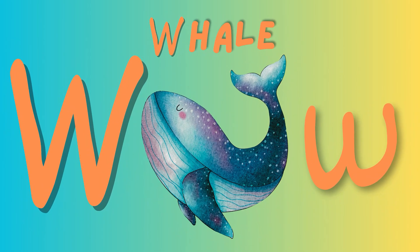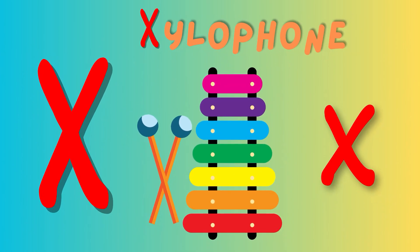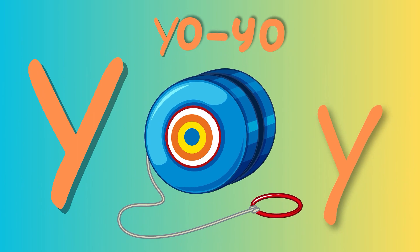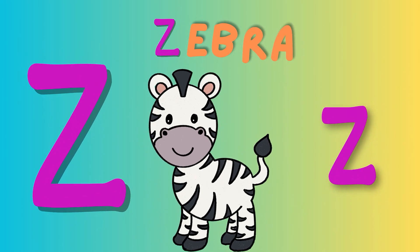W is for Whale. Whale, Whale. This is a Whale. Whale, Whale. X is for xylophone. Xylophone, xylophone. This is a xylophone. Xylophone, xylophone. Y is for yo-yo. Yo-yo, yo-yo. This is a yo-yo. Yo-yo, yo-yo. Z is for zebra. Zebra, zebra. This is a zebra. Zebra, zebra.